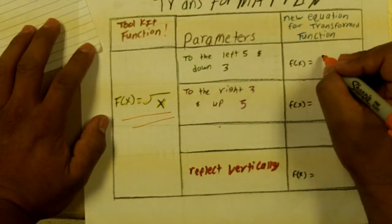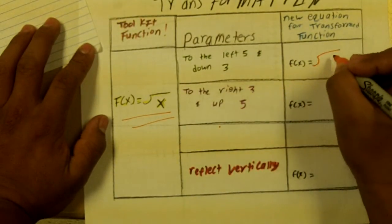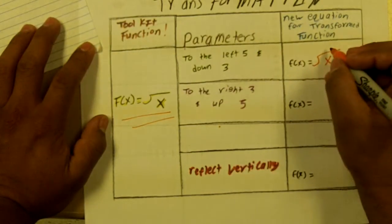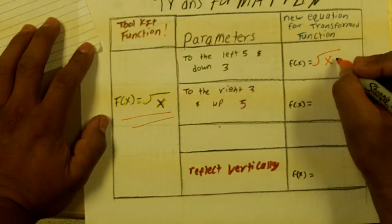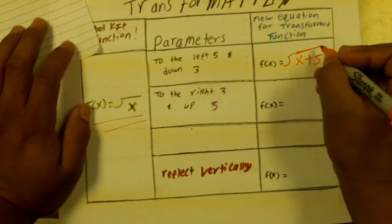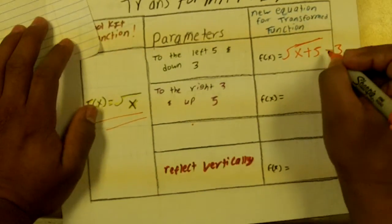So we draw our equation x and then normally if you go to the left you would subtract, but here you're going to add five. It's going to be under the square root and then you subtract three because it's going down.